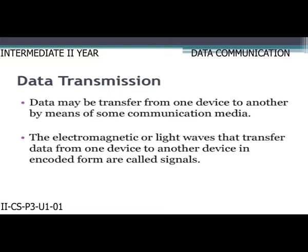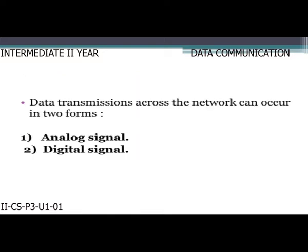Data may be transferred from one device to another by means of some communication media. The electromagnetic or light waves that transfer data from one device to another in encoded form are called signals. Data transmissions across the network can occur in two forms: analog signal and digital signal.